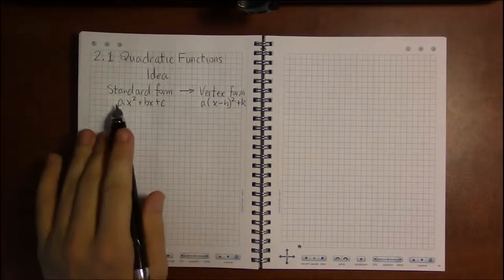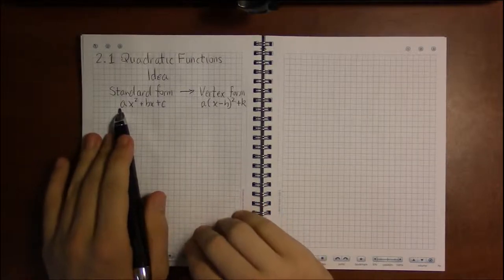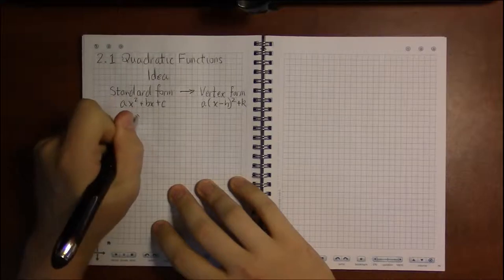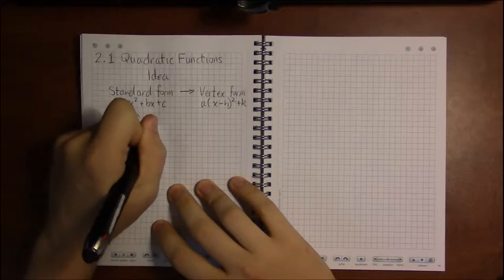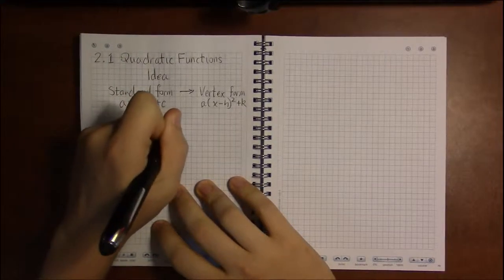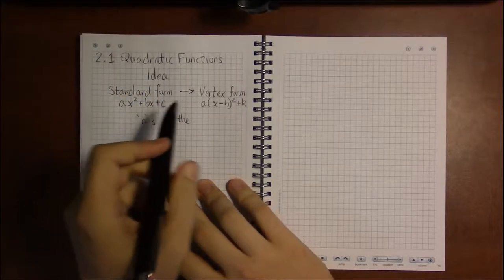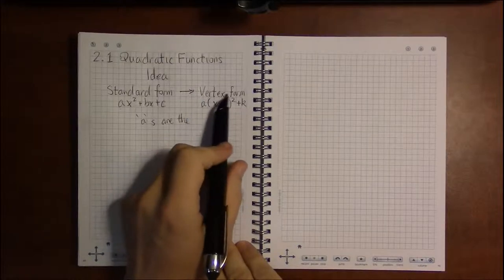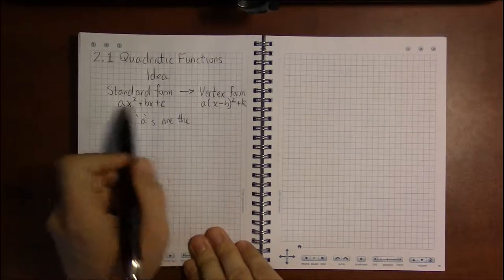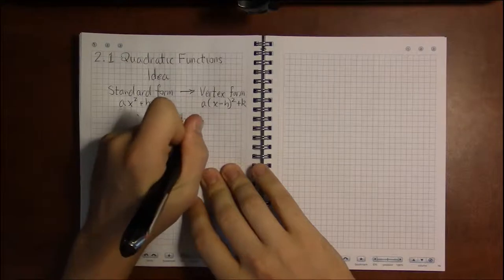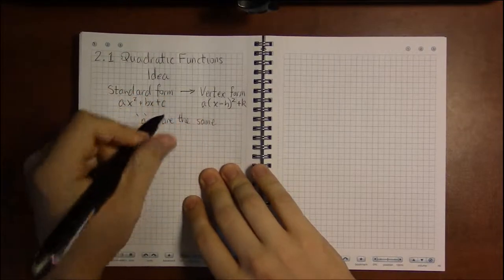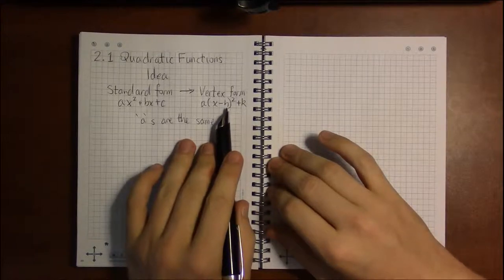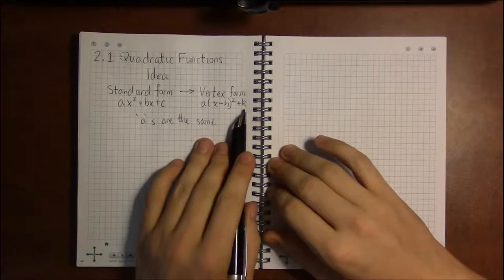So the first thing to notice is that I've got an a in both the standard and the vertex form. In both forms, the a's are the same. So the a in standard form is going to have the exact same value as it will in its vertex form, and vice versa.